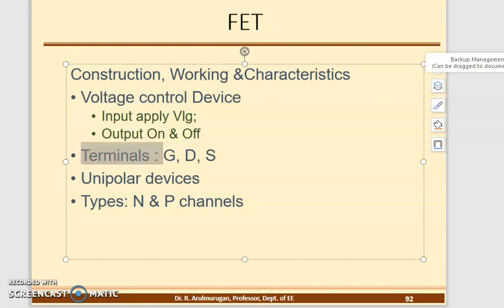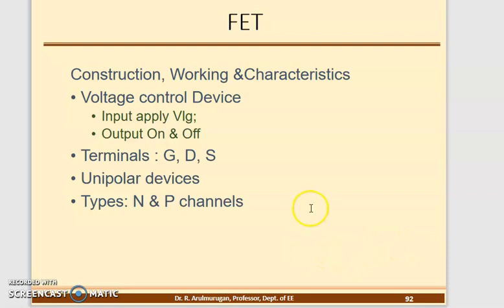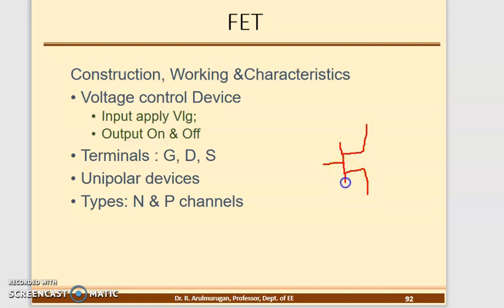Now we want to know about the terminals of the FET — Field Effect Transistor. FET consists of three terminals: Gate, Drain, and Source. The next version of the FET is called MOSFET. The FET symbol has the Gate terminal on one side, the Drain terminal at the top, and the Source terminal at the bottom.